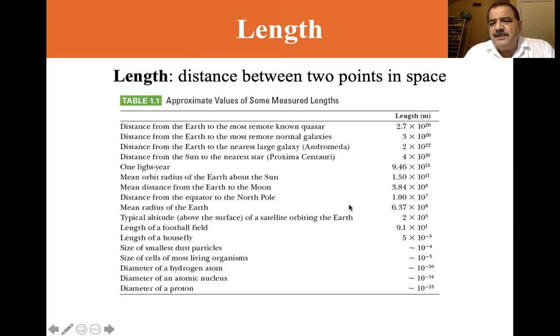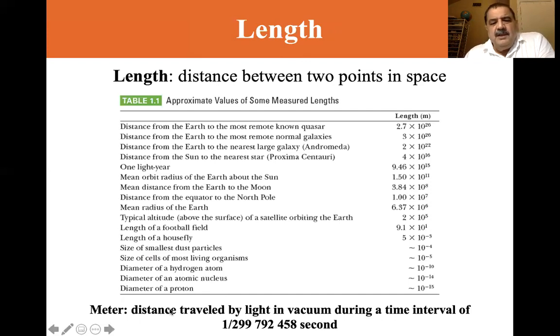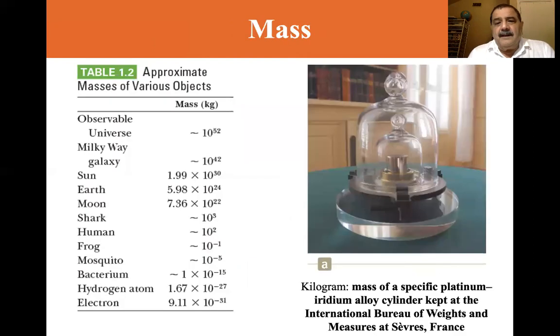The mean radius of the Earth is 6.37 times 10^6 meters. The length of a football field, 100 yards, is 9.1 times 10^1, which is 91 meters. The diameter of a proton is on the order of 10^-15 meters. The meter is the distance traveled by light in vacuum during a time interval of one part in 299,792,458 seconds.